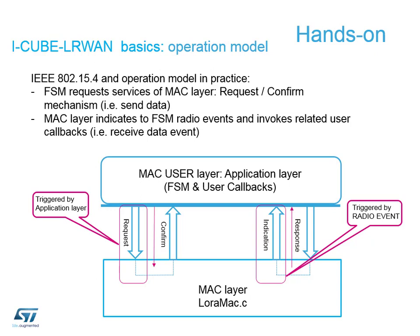Regarding the files in use: our MAC user layer or application layer is main.c and lora.c. The main.c file contains the callbacks; lora.c is the finite state machine. The finite state machine sends the request down to the MAC layer, controlled by lora_mac.c. When we receive a radio event, the indication is triggered from lora_mac.c back up to the finite state machine in lora.c.